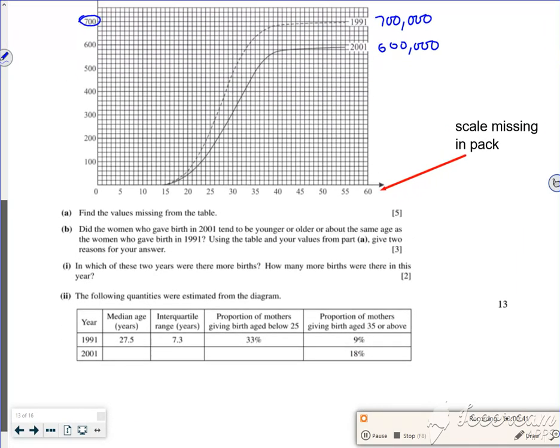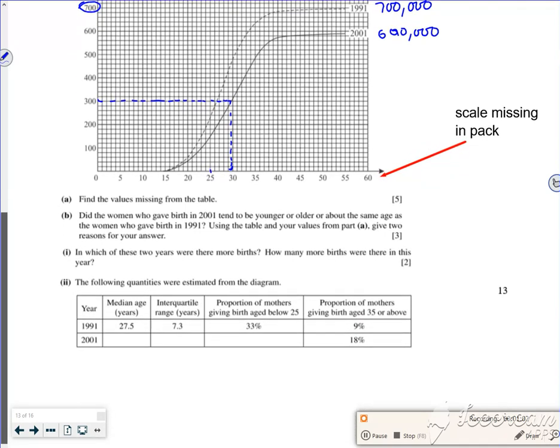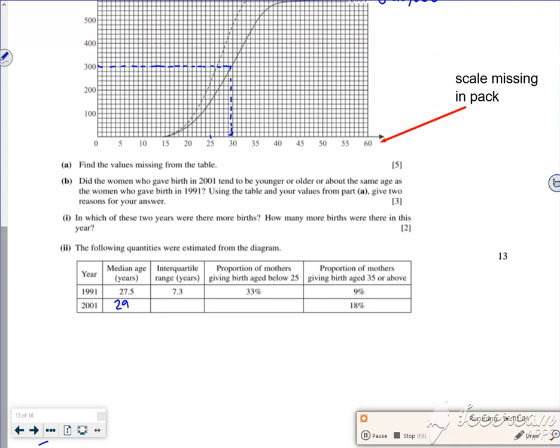So I need the median age for 2001. So if I take 2001 as 600,000, very carefully if I draw my line across at 300,000 going across to there and down, you'll get a much more accurate one but I'm thinking 29.5. So 29.5 that's what I'm thinking for the median.